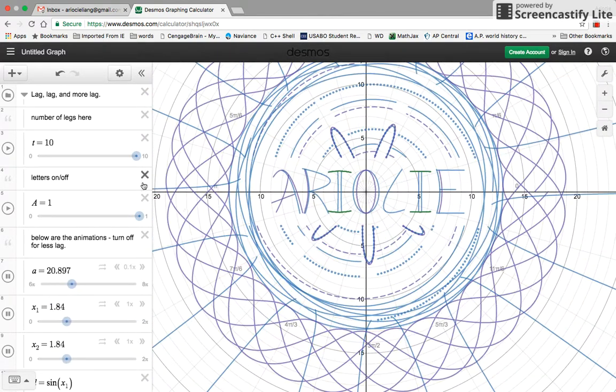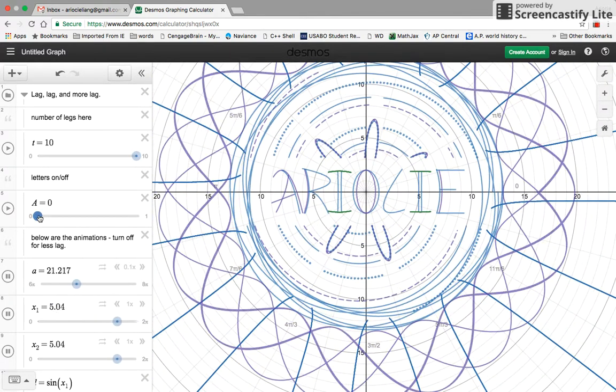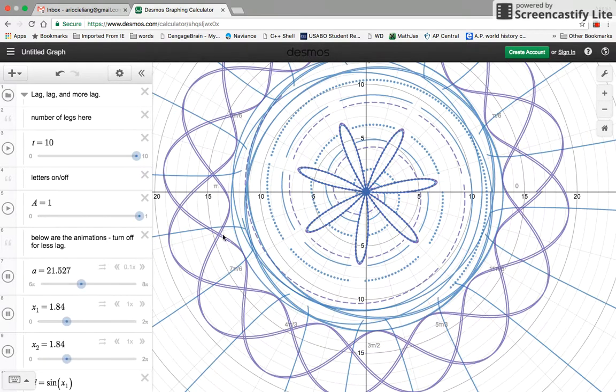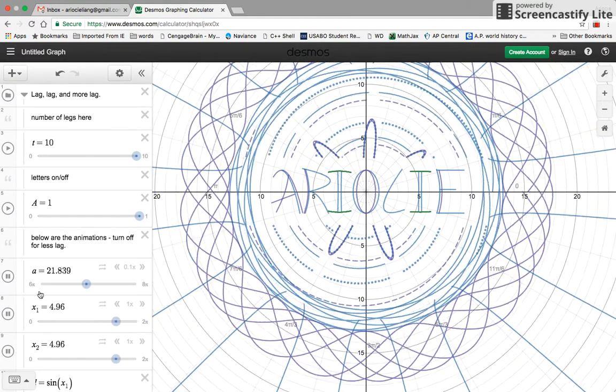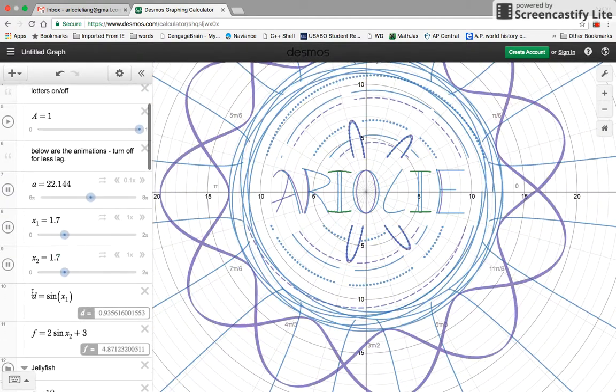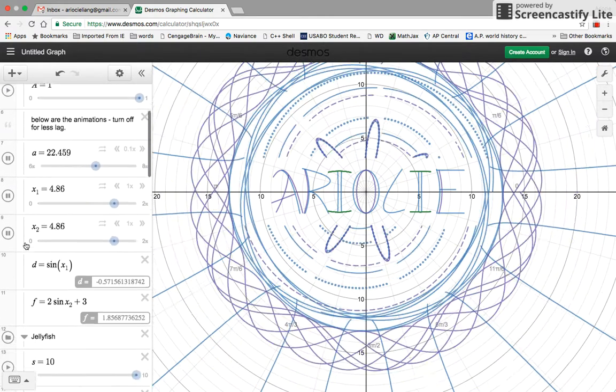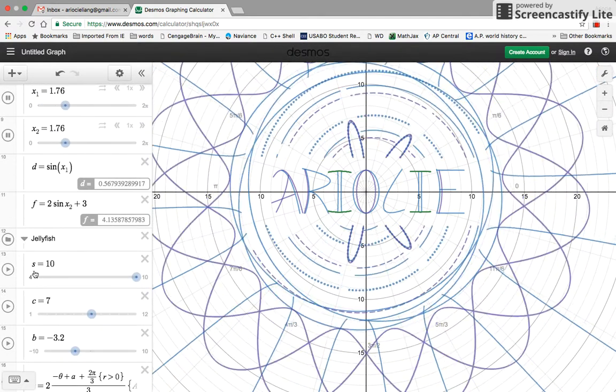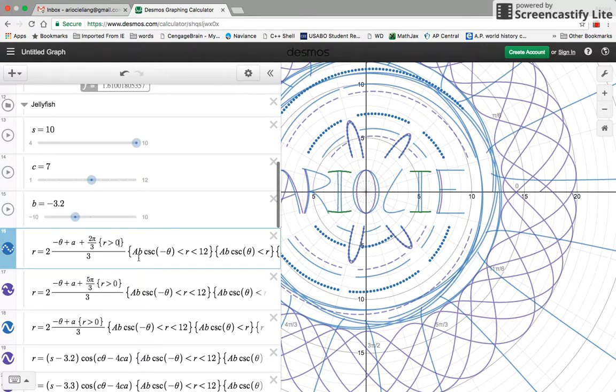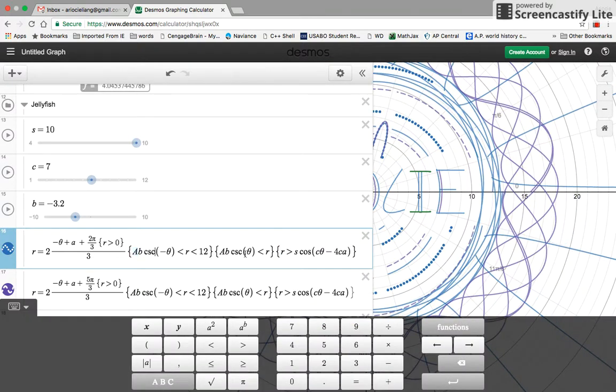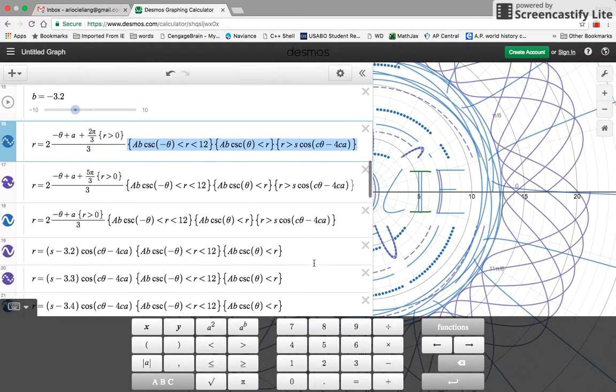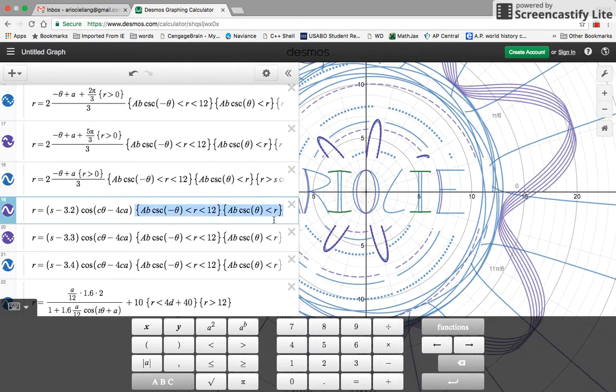So the hardest part was probably the restrictions, especially this part. You're gonna have to put a lot of little equations in there. If you look down here, I put restrictions with the A in every single one of these. Look at these restrictions, they're longer than the equations themselves.